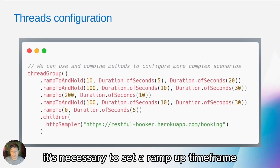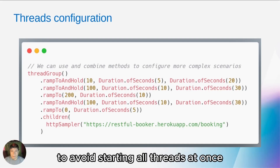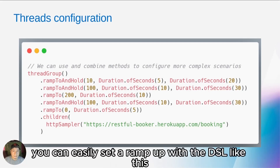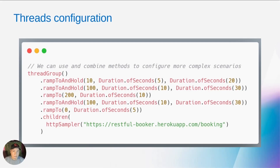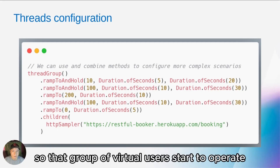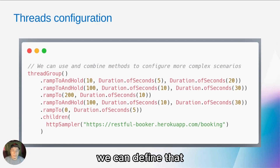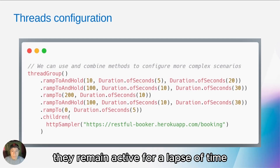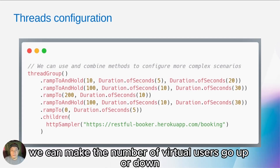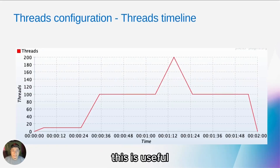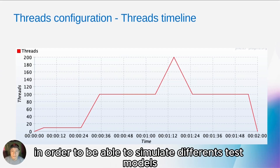When working with many threads, it's necessary to set a ramp-up time frame to avoid starting all threads at once, affecting performance metrics and load generation. You can easily set a ramp-up with the DSL like this. We can set up combinations so that groups of virtual users start to operate after a certain time after the test has started. We can define that they remain active for a period of time. We can make the number of virtual users go up or down based on our needs. This is useful in order to be able to simulate different test models.